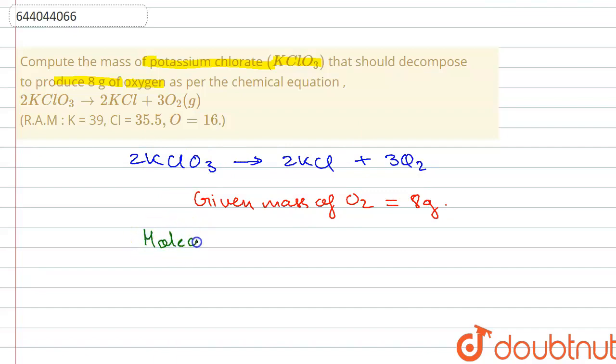The molecular mass of KClO3 will be, potassium is 39, chlorine is 35.5 plus 3 atoms of oxygen. That is 3 into 16 equal to 122.5 grams and the molecular mass of oxygen is 16 into 2 that is 32 grams.